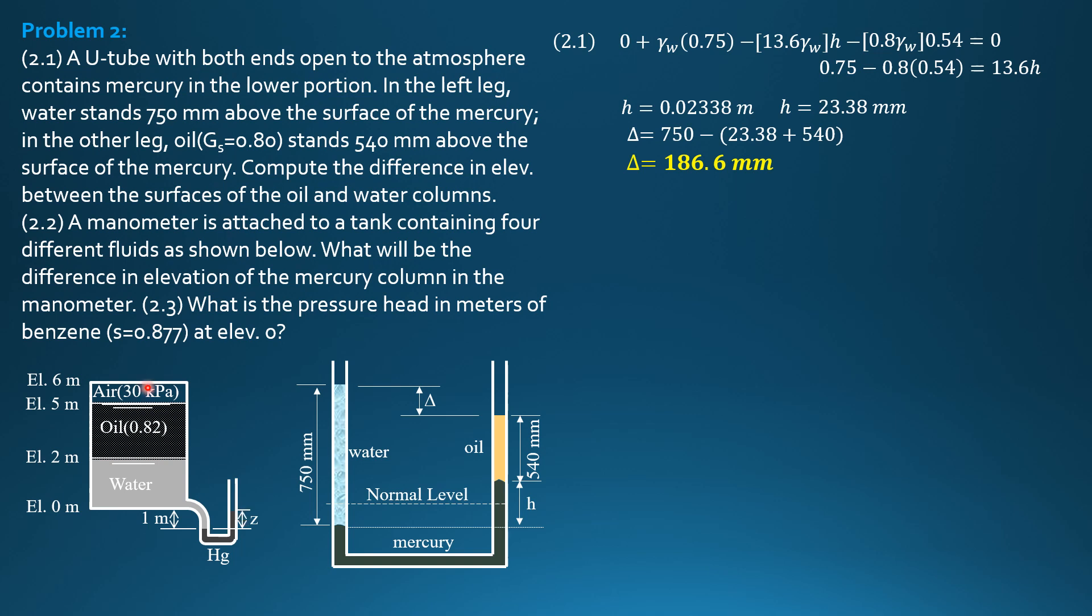We sum up pressure from the airspace where the pressure is uniform at 30 kilopascals. We go down by 3 meters, 5 minus 2, and this is oil. We go down again by 2 plus 1 to reach this point. Then jump across. These two points have the same pressure. They lie on the same elevation and same homogeneous fluid, which is mercury, the intervening passage.